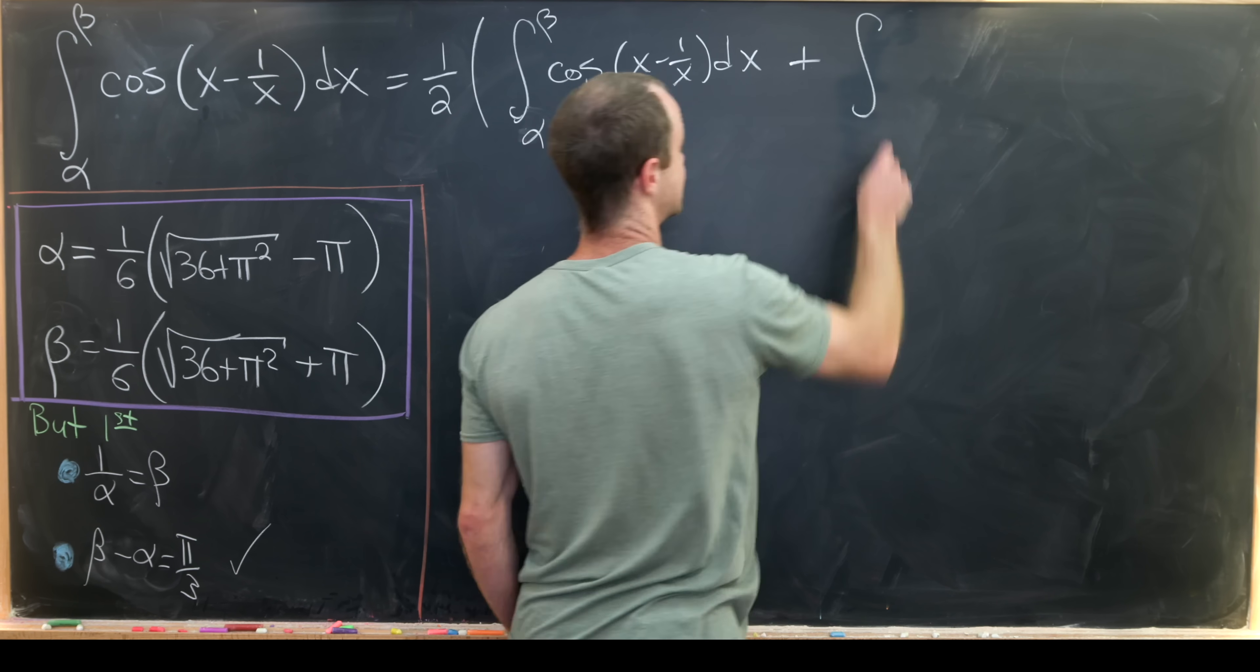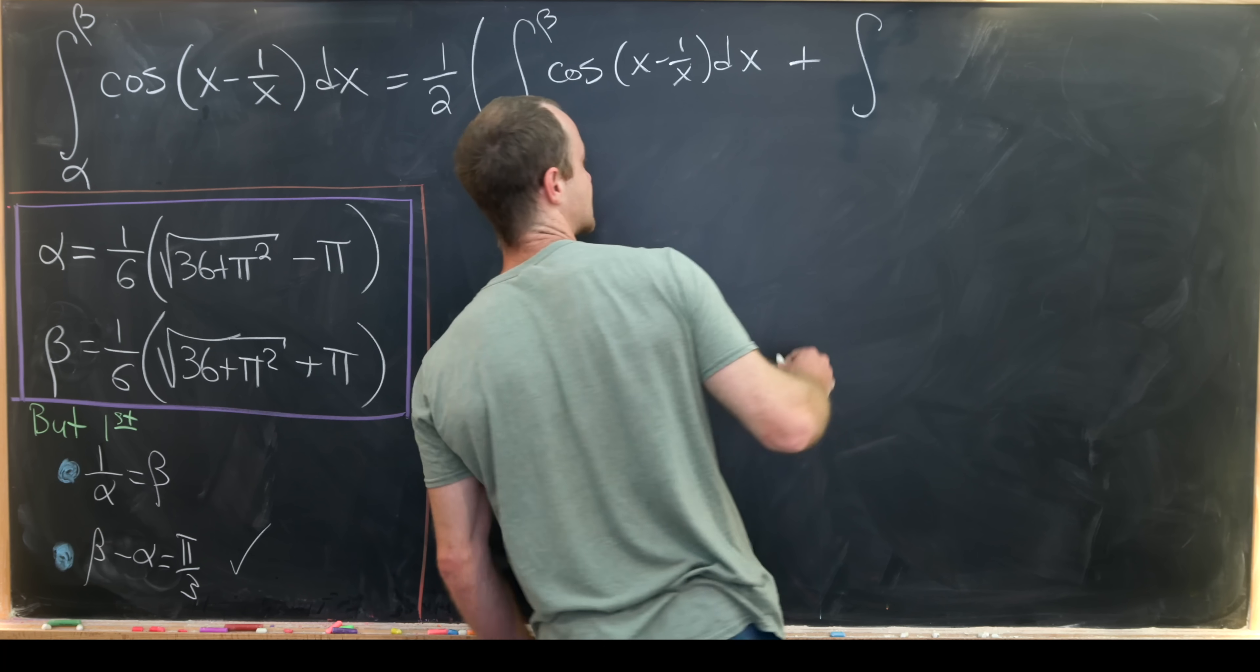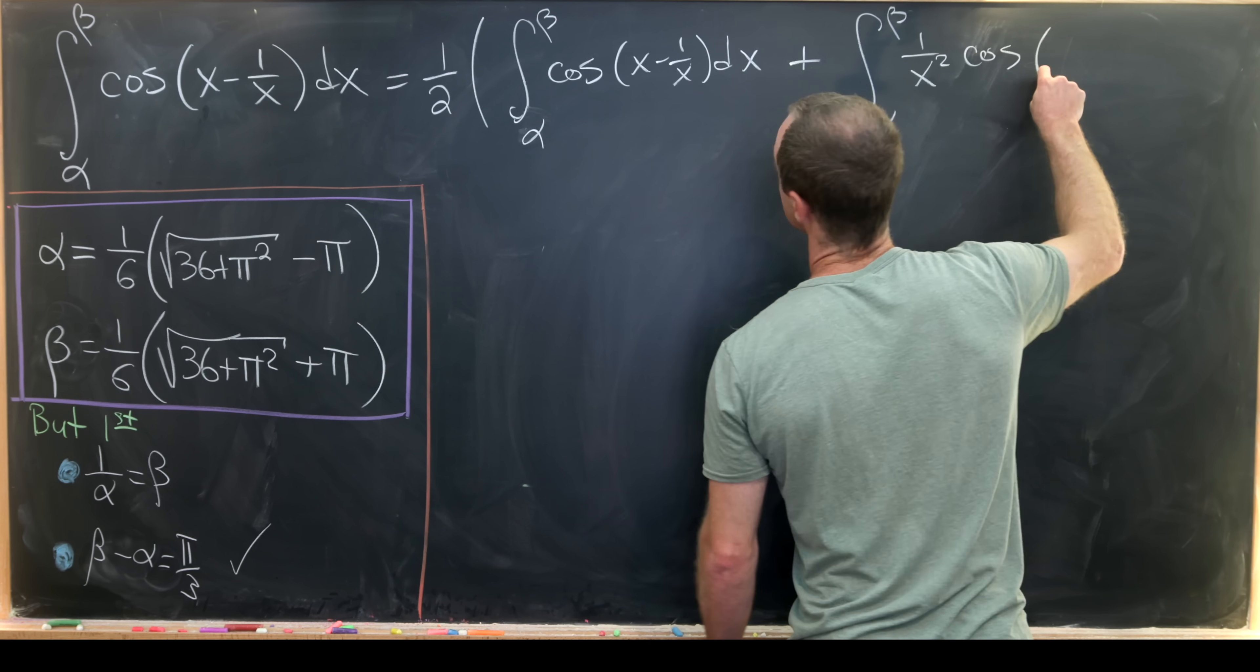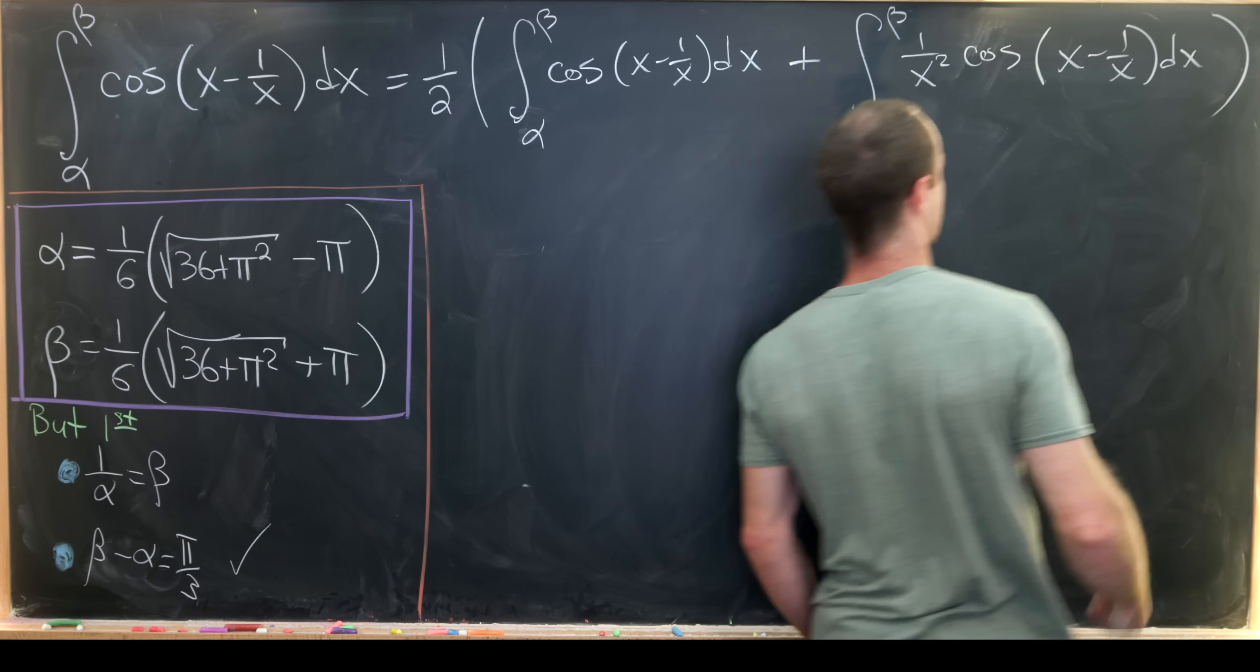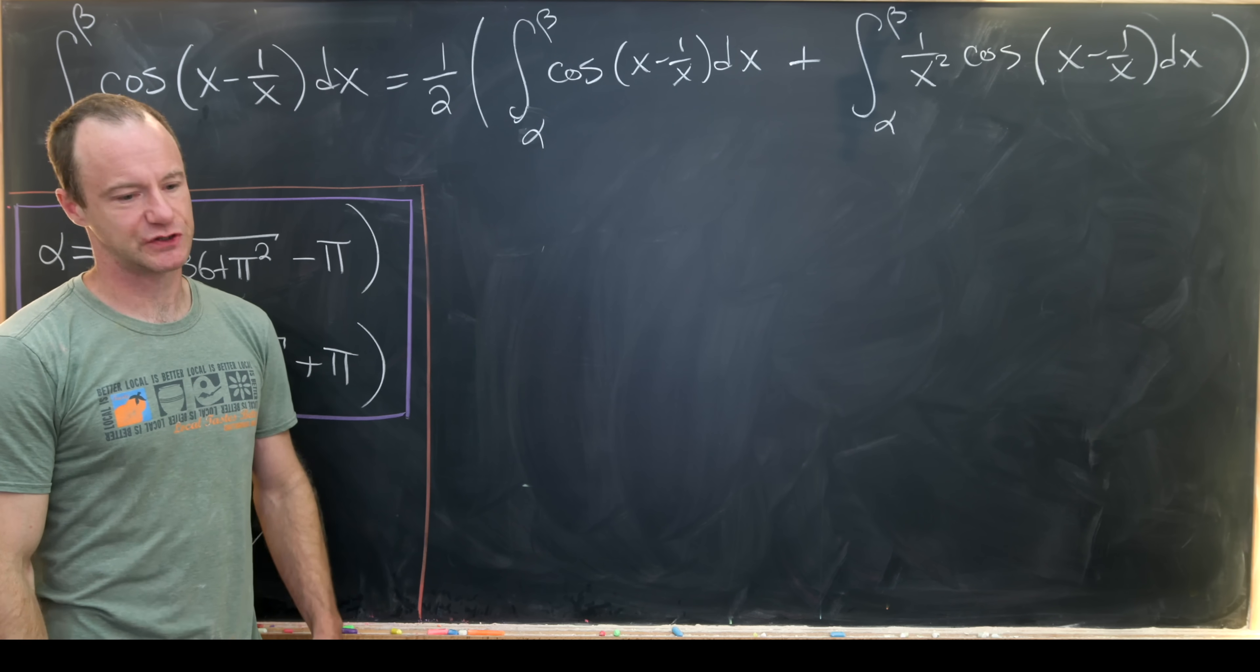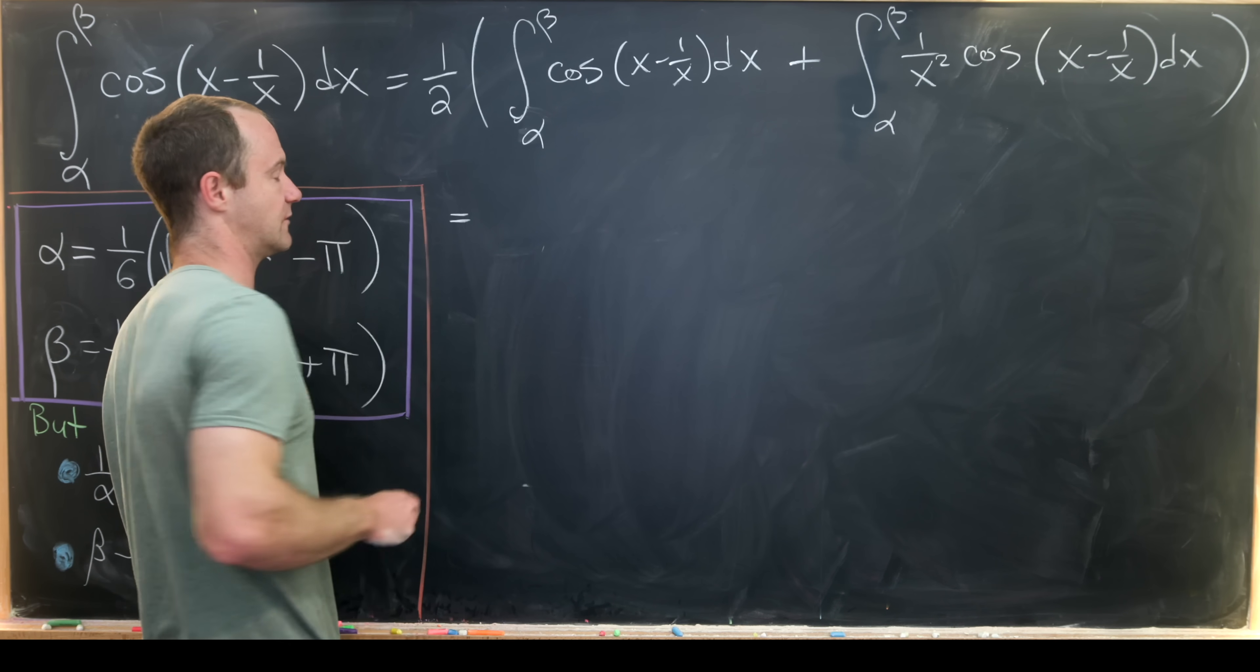And so that would be the integral from alpha to beta of cosine of x minus 1 over x dx plus the same integral. But I'll use that equality that we proved on the last board. So that'll be the integral from alpha to beta of 1 over x squared times the cosine of x minus 1 over x dx.